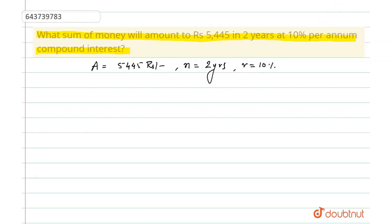In this problem, we will apply the formula as A equals P times (1 plus r by 100) raised to the power n.